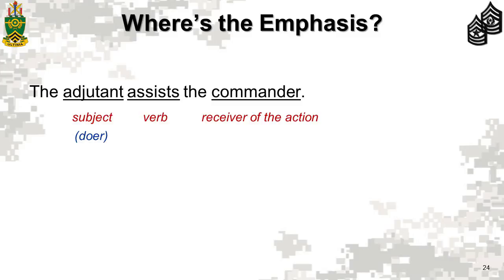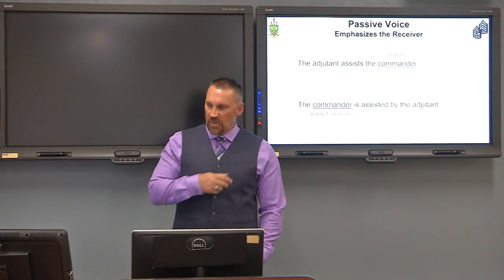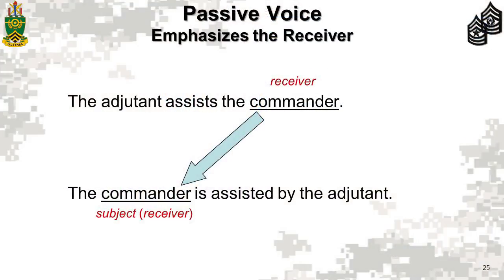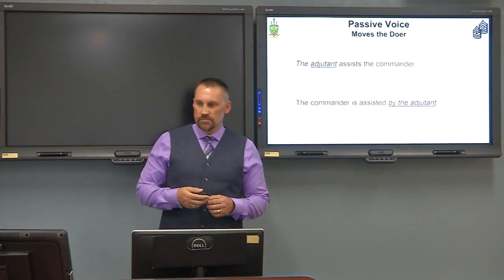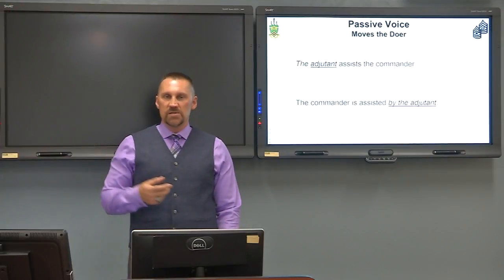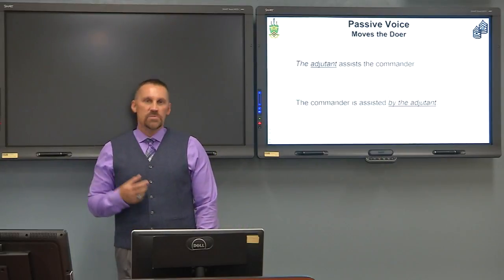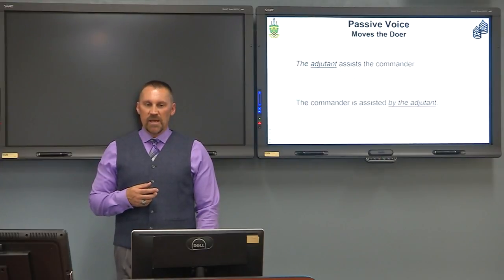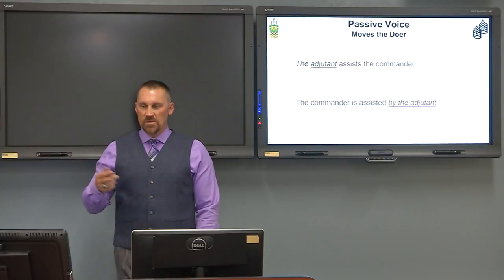Here's another example: 'The adjutant assists the commander.' The emphasis is on the subject and the doer — the adjutant. The commander is the receiver of the action. If we reword that to 'The commander is assisted by the adjutant,' we're taking the receiver of the action and moving it to the subject of the sentence. We've made the receiver the subject — that's passive voice. It also moves the doer to the end of the sentence, reversing receiver and doer.